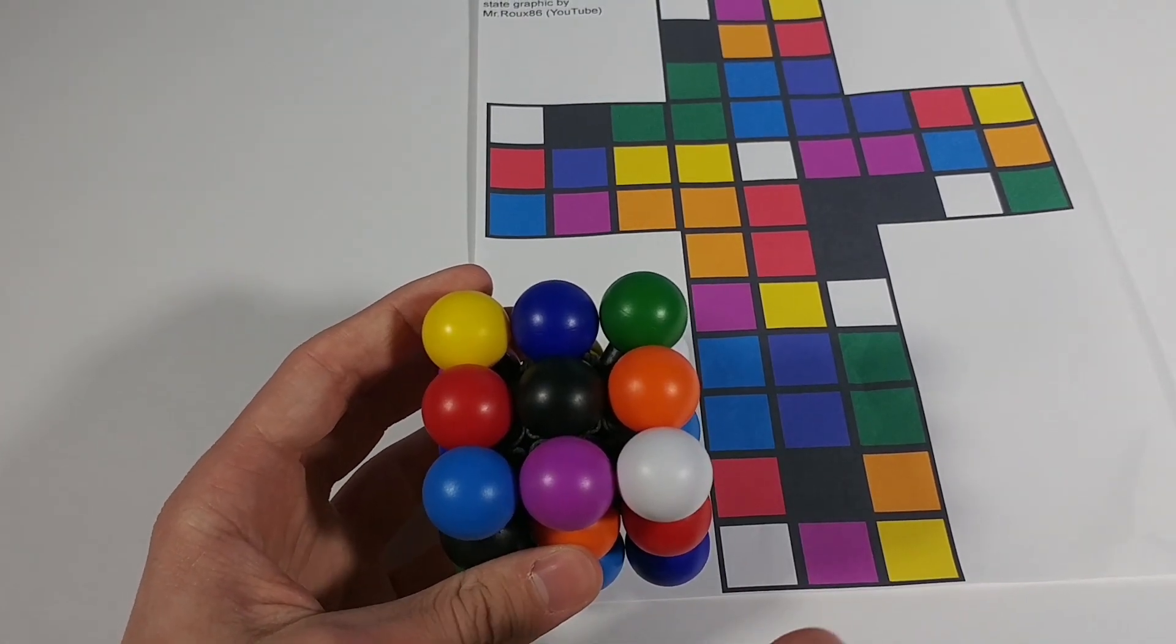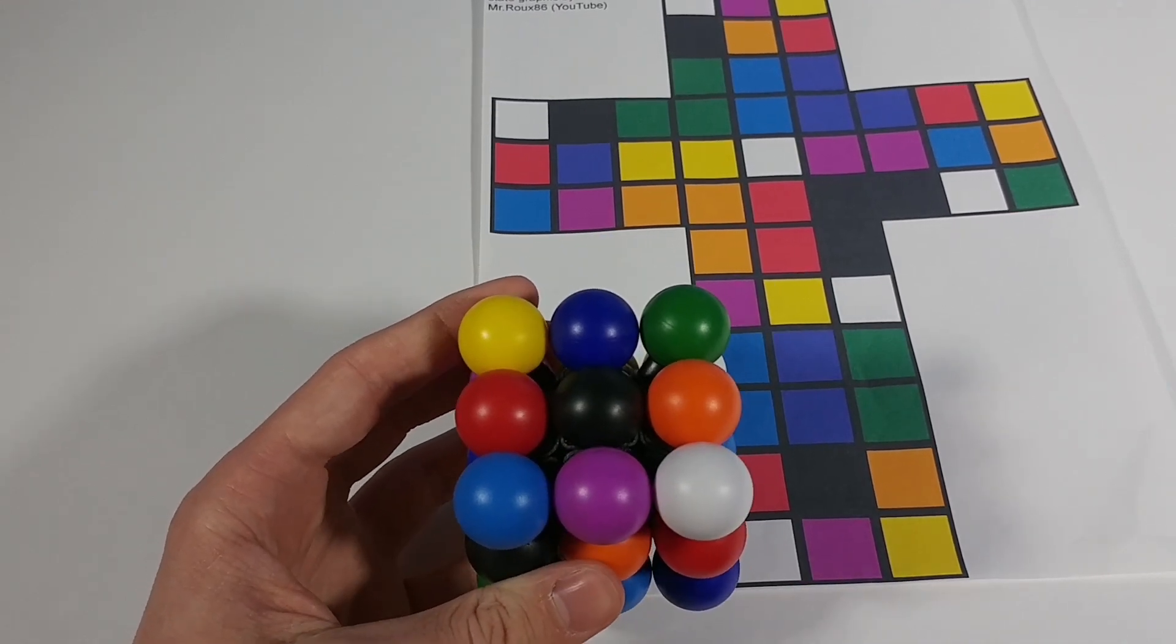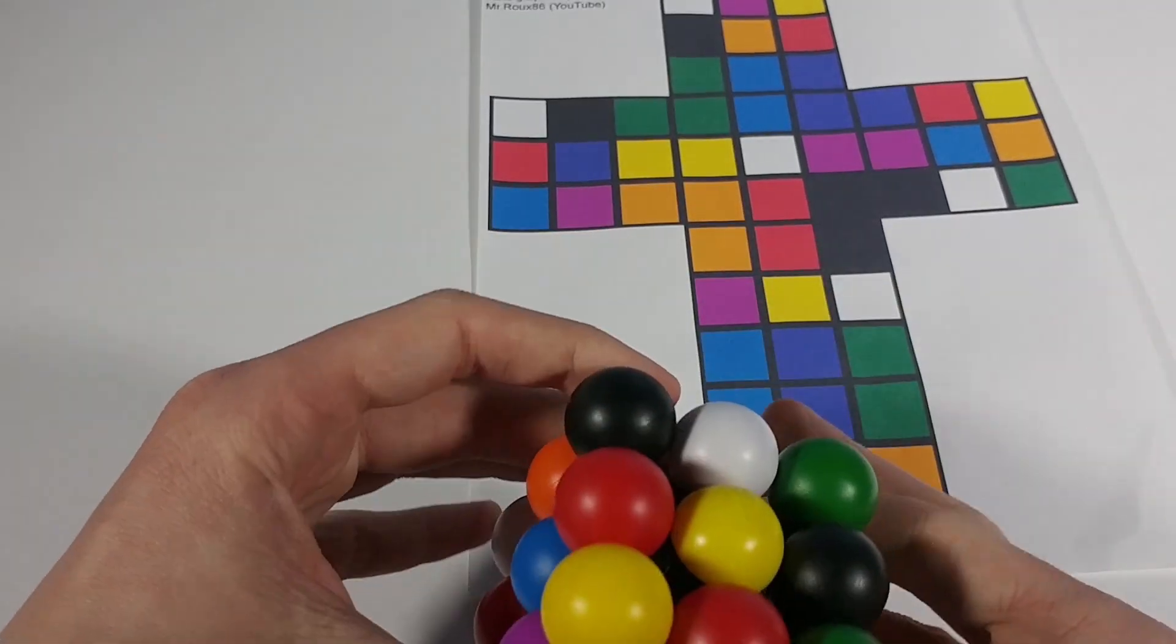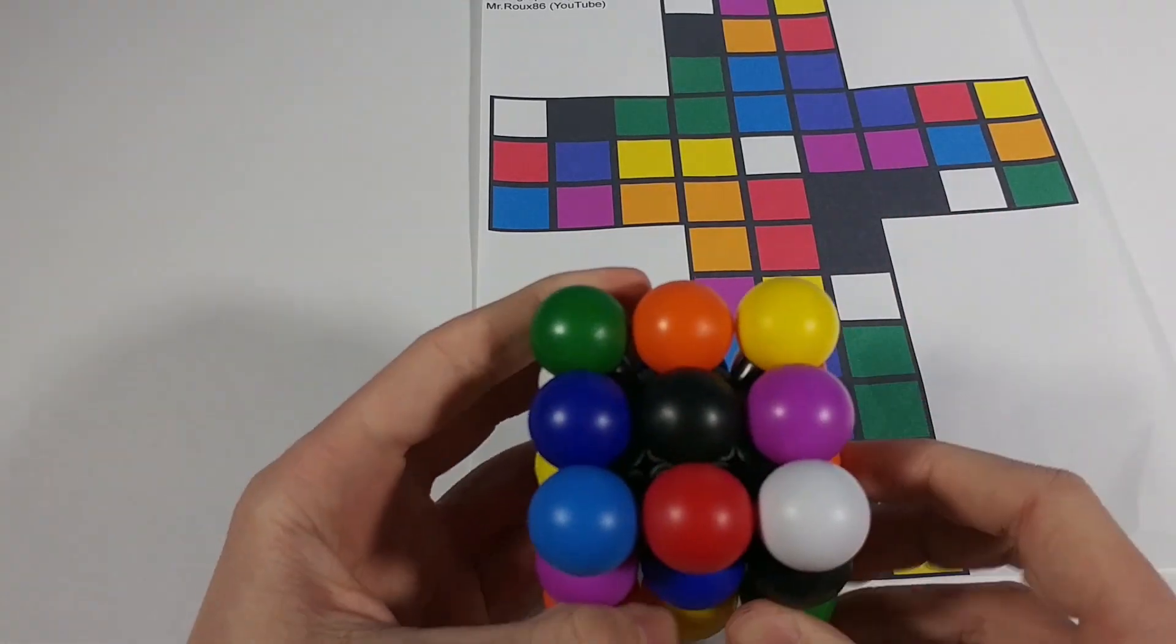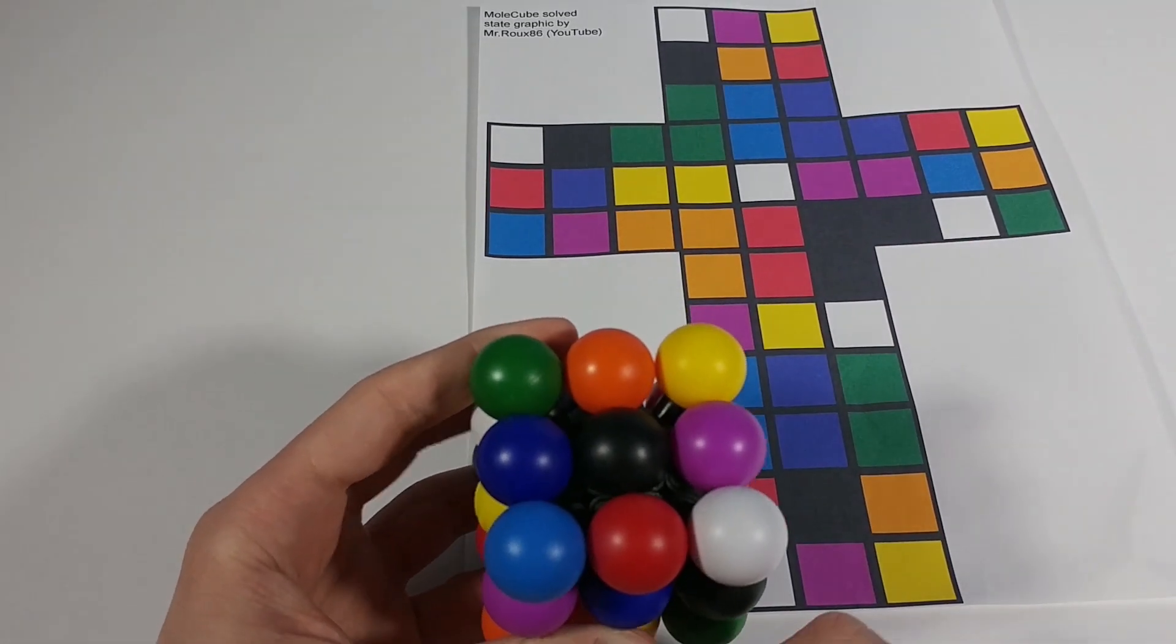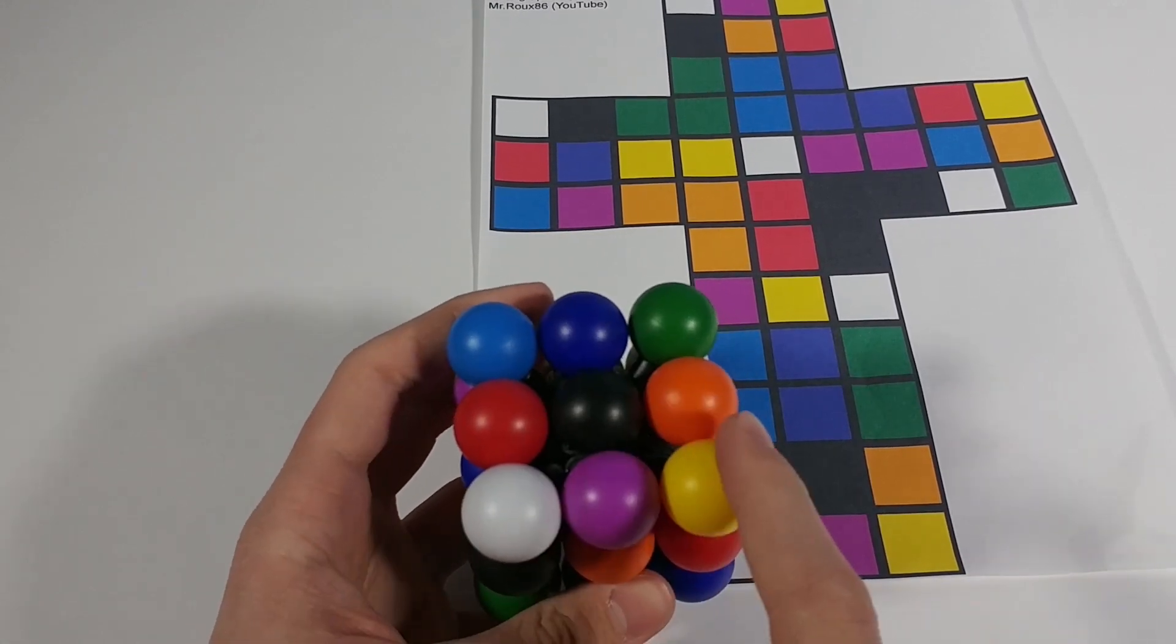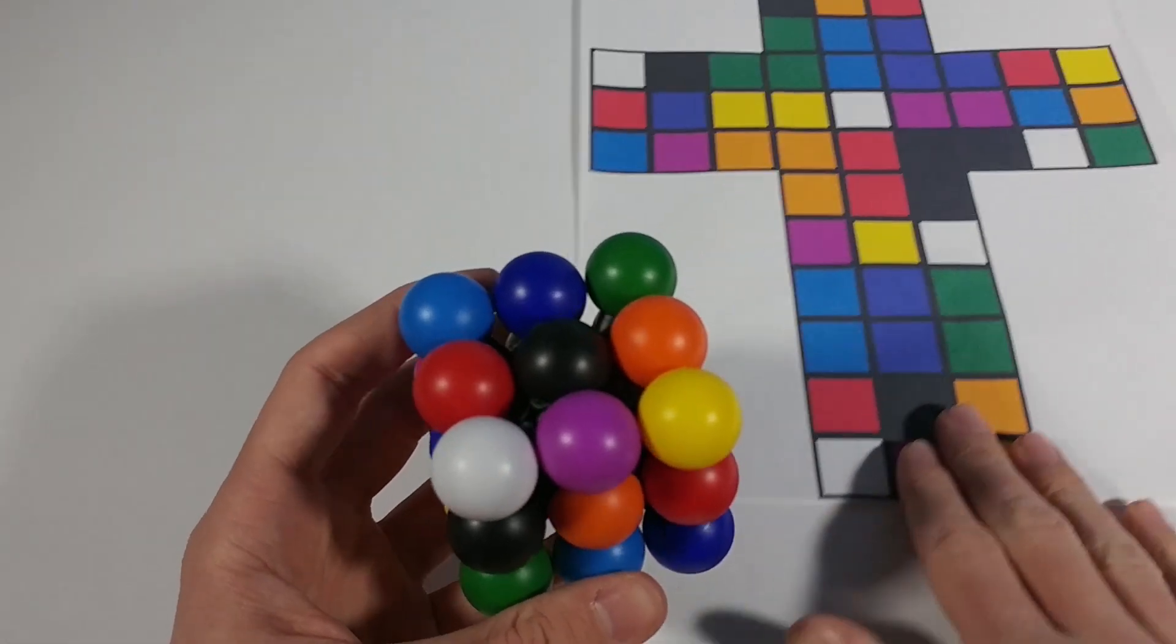So all my edges are good. And now the only thing we have to do is our corners and I can see we have a perm corner cycle. So I can do this and then right here.